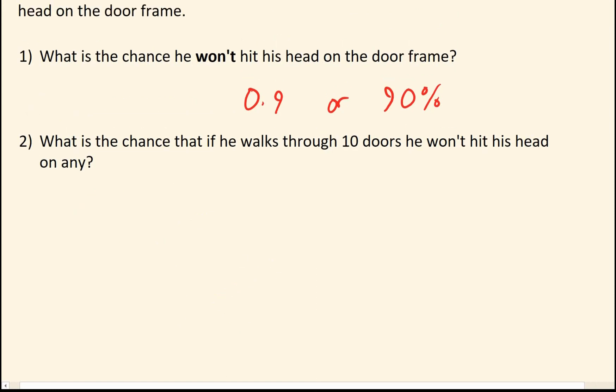So the odds of missing the first door is going to be 0.9. The odds of missing the second door is going to be 0.9. The odds of missing the third door is going to be 0.9, and you get the point. It's going to be 0.9 ten times in a row. Luckily in maths, we have a way to write that, and that is just 0.9 to the power of 10. You then work it out, and that's going to be the odds of him not hitting his head 10 times in a row.